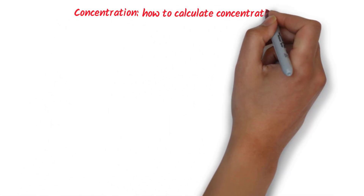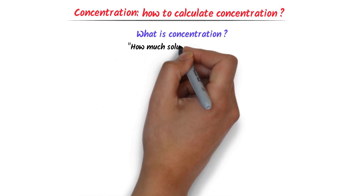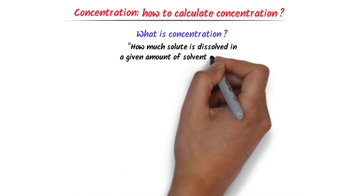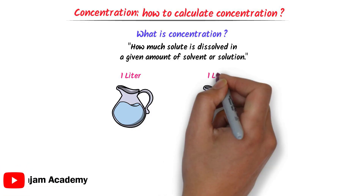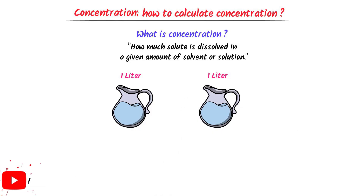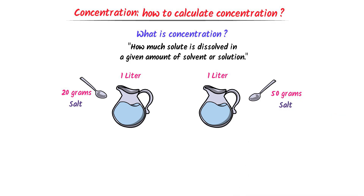Concentration — how to calculate the concentration of a solution. Firstly, concentration measures how much solute is dissolved in a given amount of solvent or solution. For example, consider 1 liter of water in this jug and 1 liter of water in this jug. Now I dissolve 20 grams of salt in this jug to make a salt solution, while I dissolve 50 grams of salt in this jug to make a salt solution.